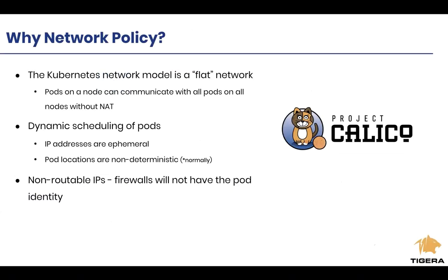Now that you have a high-level overview of what Calico is, let's dive into what network policies are in Kubernetes. Kubernetes by design provides a flat network architecture. That means the two dimensions around connectivity and security are intentionally independent. By design, when you launch a Kubernetes cluster, every pod gets its own IP address and its network is created using the CNI. However, every pod can talk to any other pod in the cluster across any namespace.